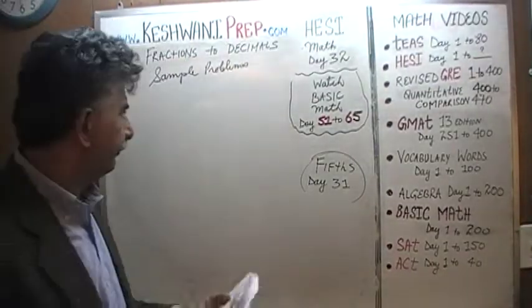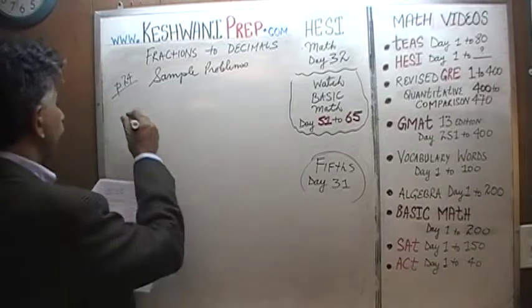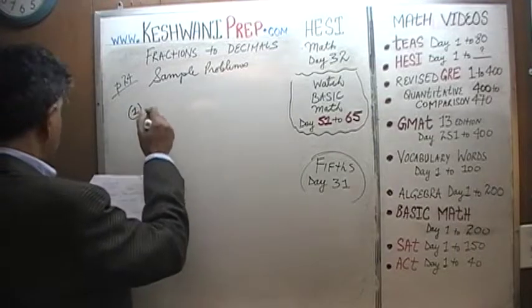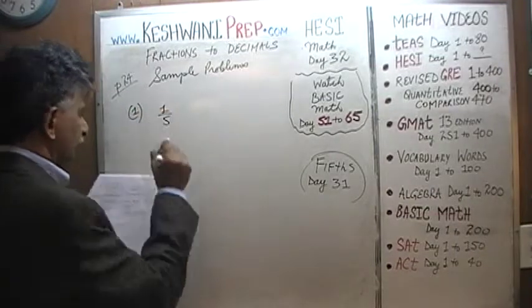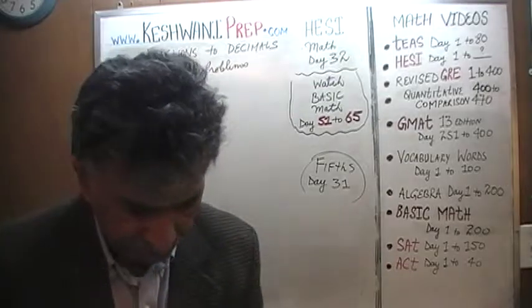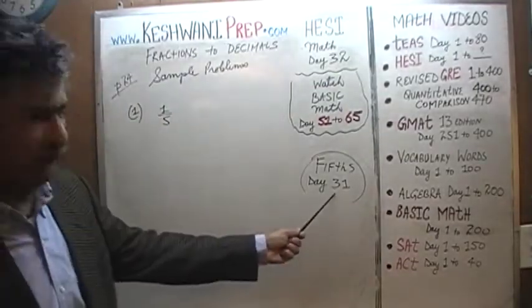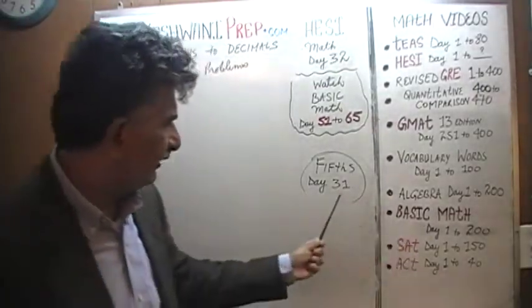Let's get going. Number one. Number one, they are asking us to convert one-fifth into decimals. We learned our fifths on day number 31, basic math, day 31.